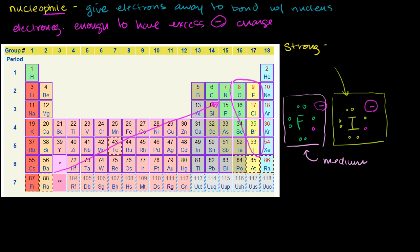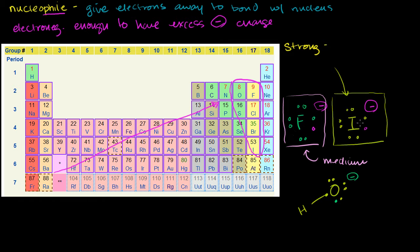Another example of a medium nucleophile — and not always a single atom or ion — is hydroxide, OH⁻. Oxygen typically has six valence electrons in its neutral state. When you get hydroxide, it swiped an electron from another atom, usually hydrogen, so it has a negative charge and an excess electron to give away. But oxygen is so electronegative that it kind of likes keeping it. Hydroxide says, 'I have it, I could give it away, but I'm pretty electronegative, so I kind of like hogging it.' So hydroxide is another example of a medium-strength nucleophile.